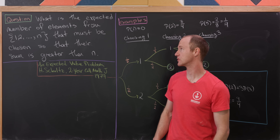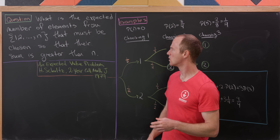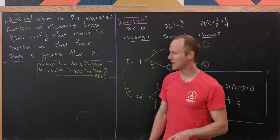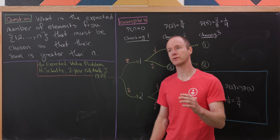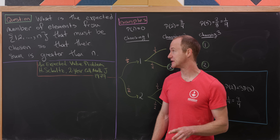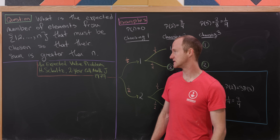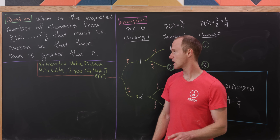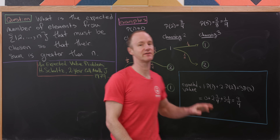Let's look at a nice expected value problem. Our goal is to determine the expected number of elements from the set containing one, two, three, all the way up to n that must be chosen so that if you take the sum of these numbers you get something greater than n. This is coming from the Two-Year College Math Journal from 1979.